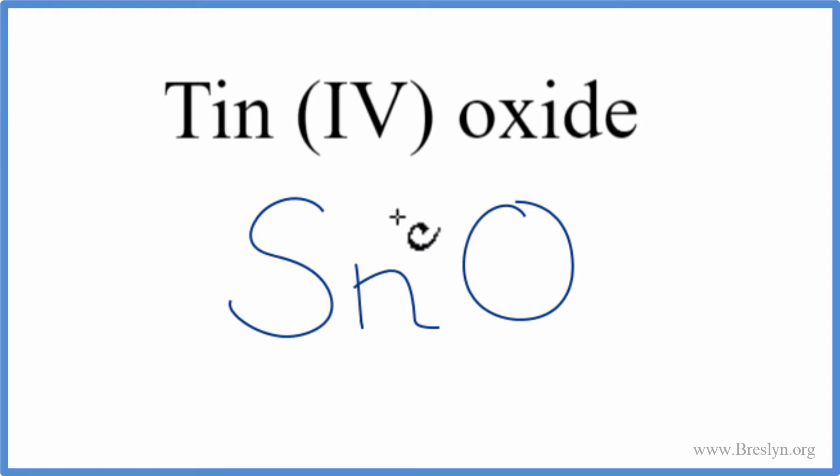We need to think about the charge on the tin and the oxygen when we write the formula. It tells us right here, tin four. That four means the tin has a four plus ionic charge. Oxygen from the periodic table is two minus.